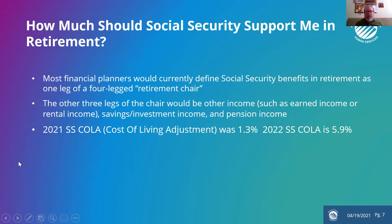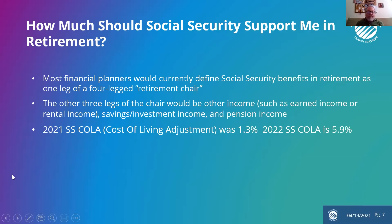The question becomes: how does social security support us in retirement? Most financial planners would currently define social security benefits in retirement as one leg of a four-legged retirement chair. The other three legs would traditionally be other income such as earned income or rental income, savings and investment income, and pension income. Now there are not as many pensions as there used to be, and some people unfortunately haven't done as well with savings and investment income. So for a lot of people, social security is the only leg of the chair that's active for them.